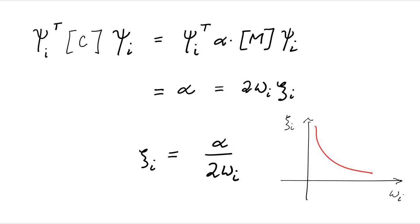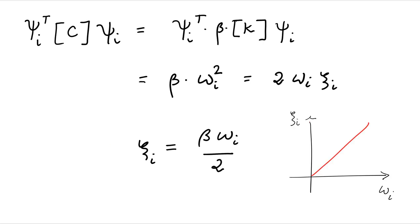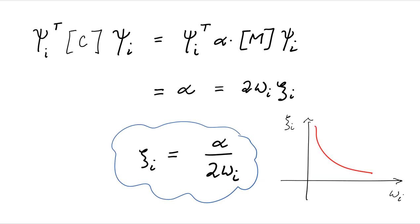So depending on what you pick, this modal damping ratios vary with frequency. So for example, if you pick mass proportional, you can show that the damping ratio varies inversely proportional to omega. So it looks like this. If you choose stiffness proportional, then you can show that psi varies linearly with omega. So the faster the modes get, the more damping they have. And if you do mass proportional, then the faster the modes get, the smaller the damping gets.